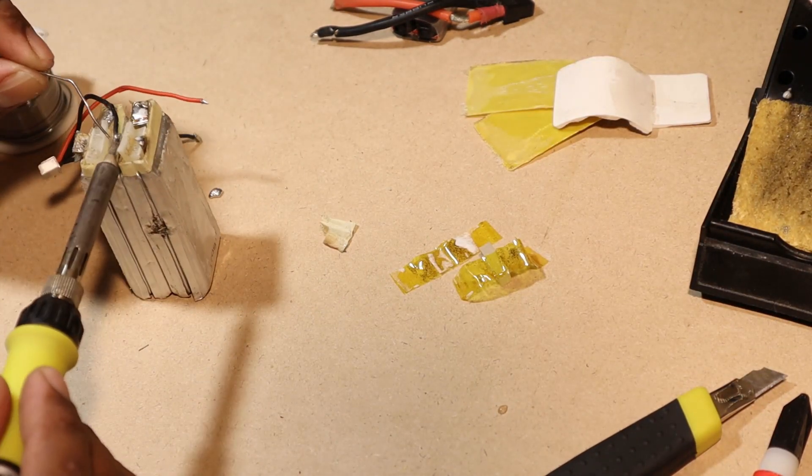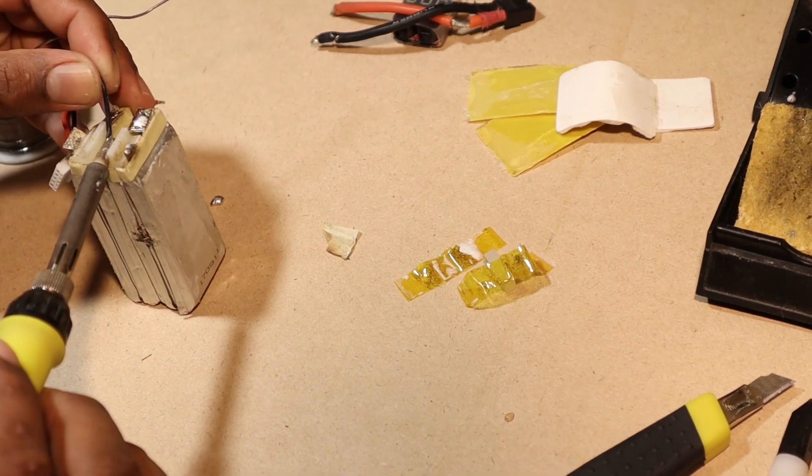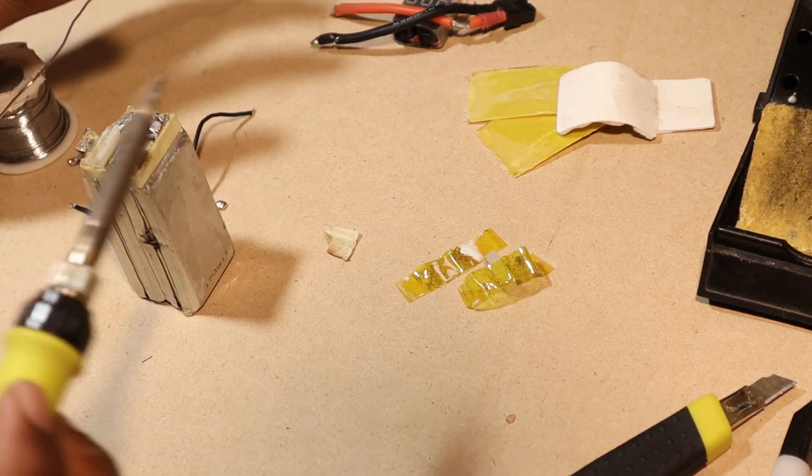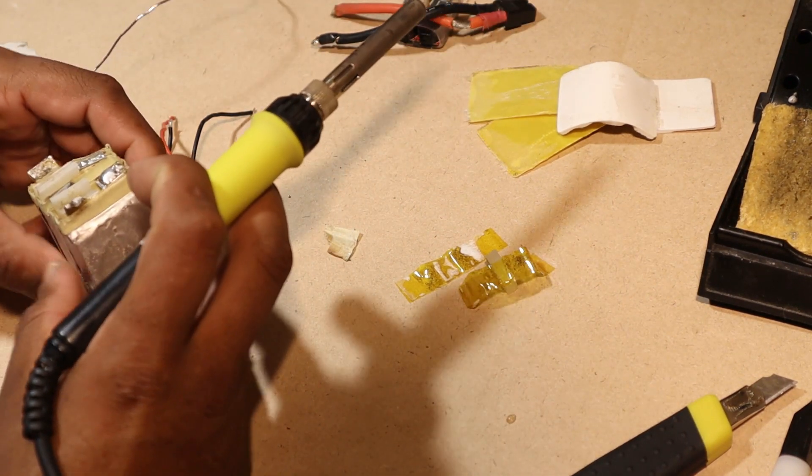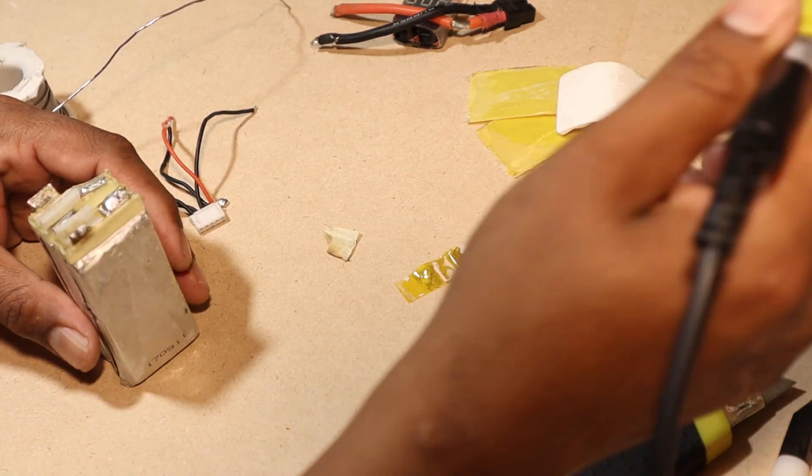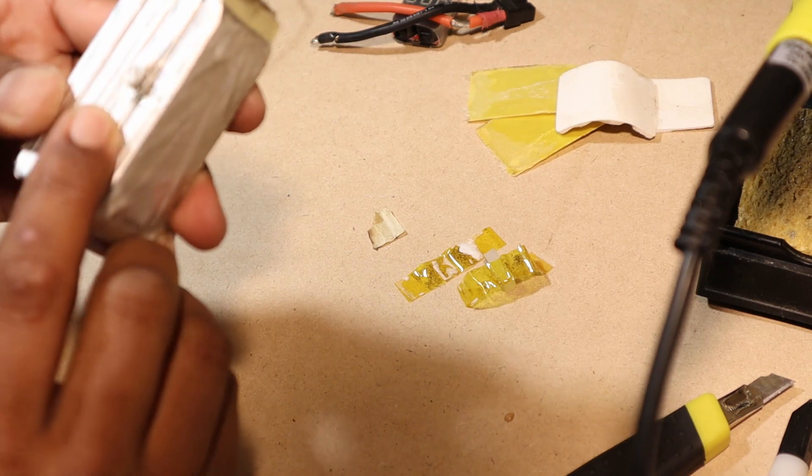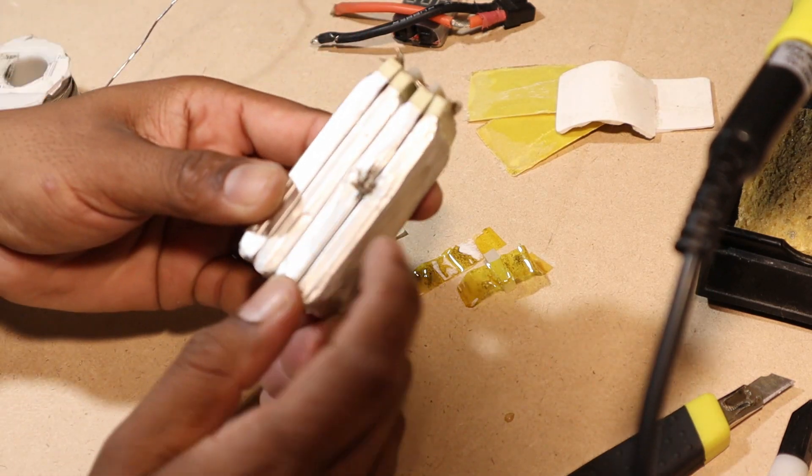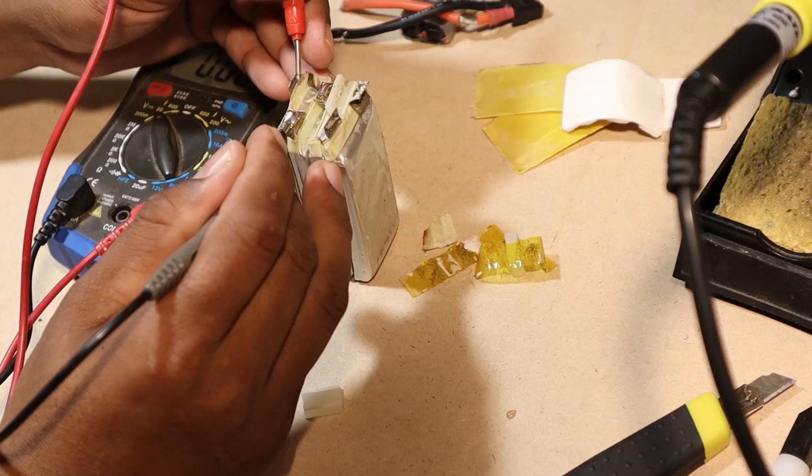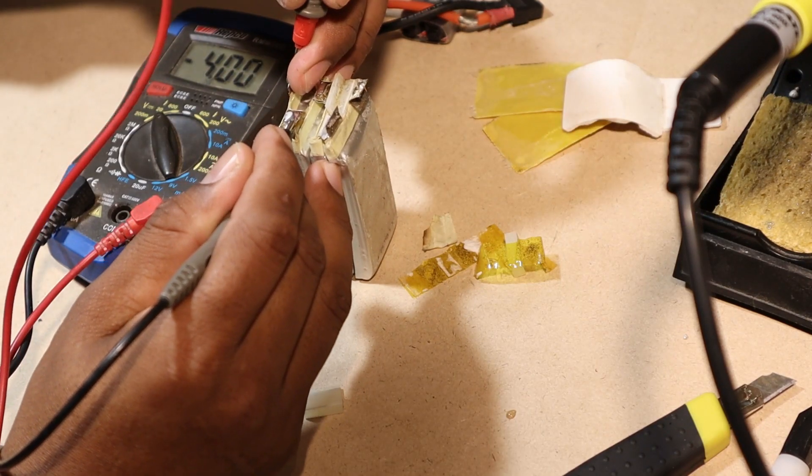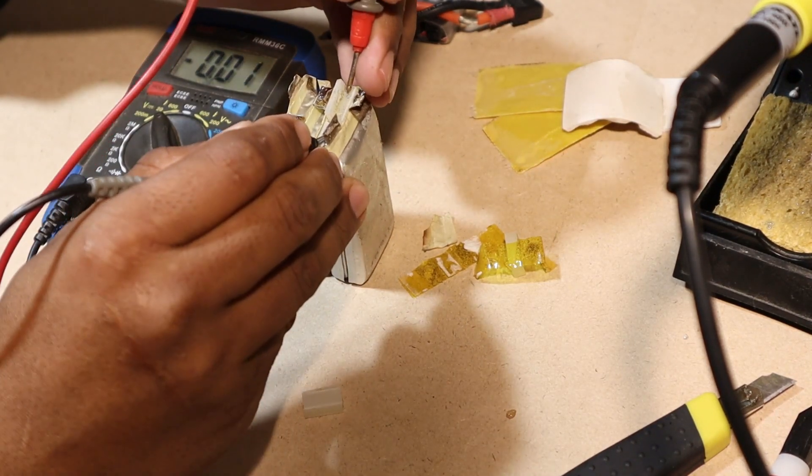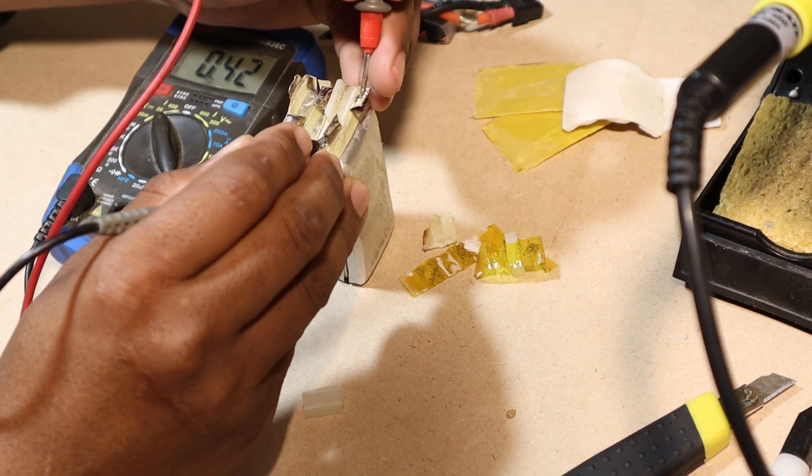Sometimes it's easier to leave the middle cell for later on because there's less chance to short circuit with any other cell. So that's our dead cell right there, cell number three. Let's check the voltage on our cells real quickly before we separate them.